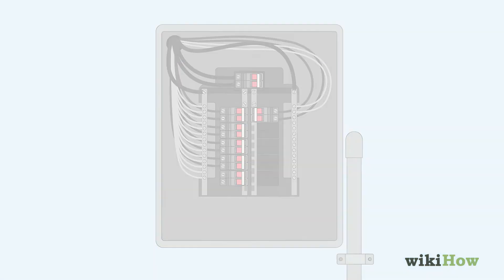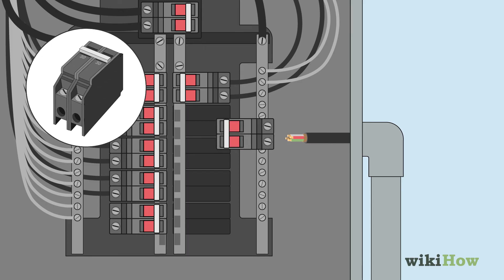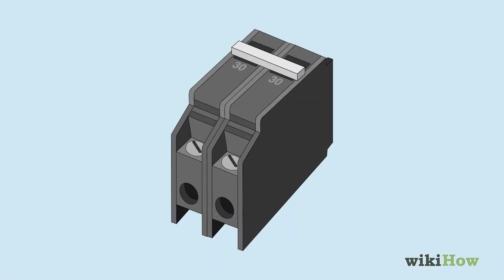Attach a cable clamp to the hole and thread the wires through it. Install a 30-amp double-pole breaker on the circuit, then push the ends of the red and black wires into the ports on the breaker.